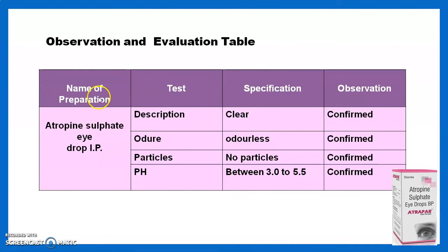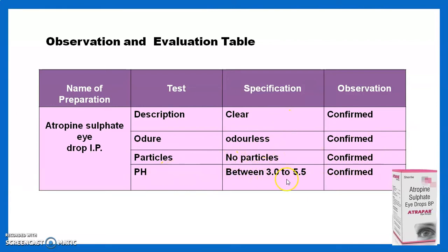The observation and evaluation table contains the name of the preparation, test, specification, and observation. Name of preparation: atropine sulfate eye drop IP. Tests: description — the preparation is clear; odor — odorless; particles — no particles present, confirmed by filtration through sintered glass filter; pH — maintained between 3 to 5.5. All evaluation tests are confirmed.